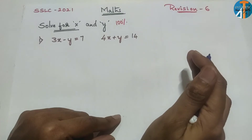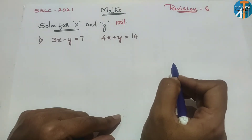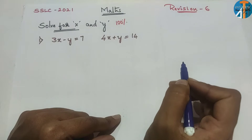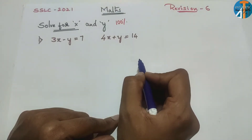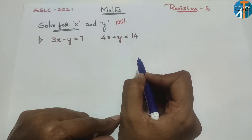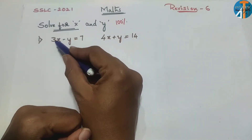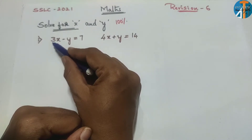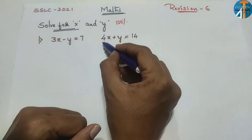First observation: check if the x coefficient and y coefficient are the same. For example, if the x coefficient is 3 in one equation and 4 in the other, they are not the same — you can see 3 and 4 are different.